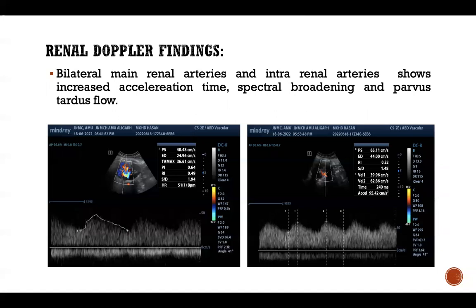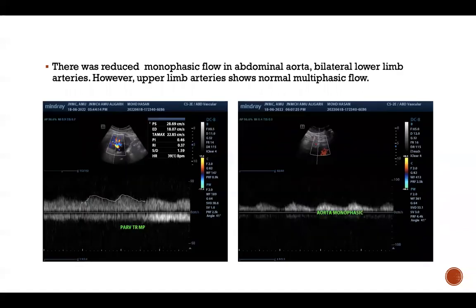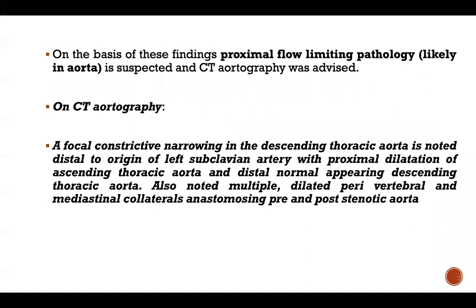On renal Doppler, the bilateral main renal arteries and intrarenal arteries showed increased acceleration time, spectral broadening, and tardus-parvus flow. There was reduced monophasic flow in the abdominal aorta and bilateral lower limb arteries. However, the upper limb arteries showed normal multiphasic flow. On the basis of these findings, a proximal flow-limiting pathology likely in the aorta was suspected and CT angiography was advised.